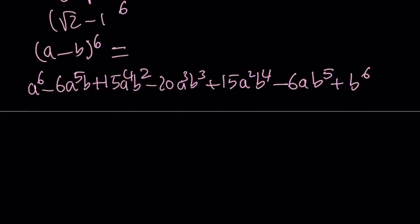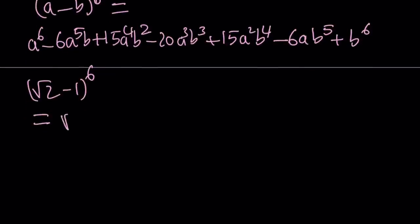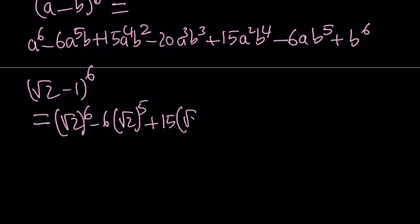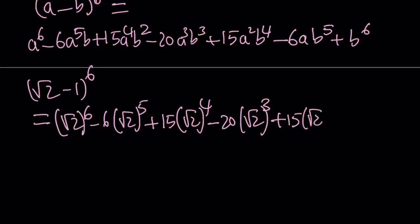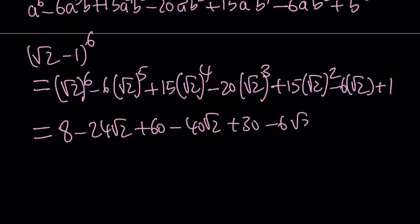If you apply that to square root of 2 minus 1 to the 6th power, we're going to get the following. Square root of 2 minus 1 to the 6th power equals square root of 2 to the 6th power minus 6 times square root of 2 to the 5th power plus 15 times square root of 2 to the 4th. Notice that the powers of 1, I don't write because they're all 1s. Minus 20 times square root of 2 to the 3rd power plus 15 times square root of 2 squared minus 6 times the square root of 2 plus 1. This is going to turn into: 8 minus 24 root 2 plus 60 minus 40 root 2 plus 30 minus 6 root 2 plus 1.